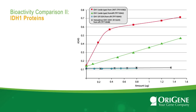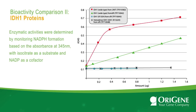Here, IDH1 proteins purified from human and insect cells are compared. Enzymatic activities were determined by monitoring NADPH formation based on absorbance at 345 nm, with isocitrate as substrate and NADP as cofactor. The red and green spots represent IDH1 wild-type protein from HEK-293 cells and SF9 cells.